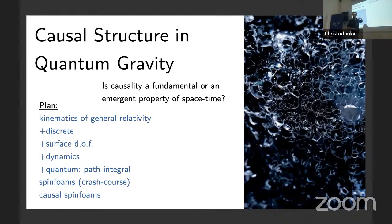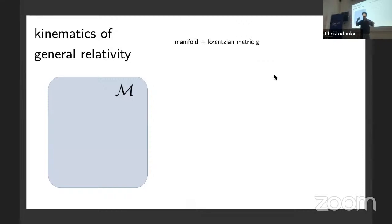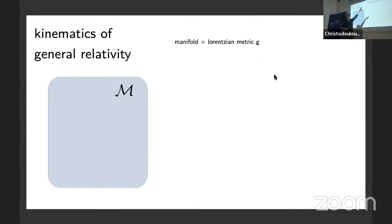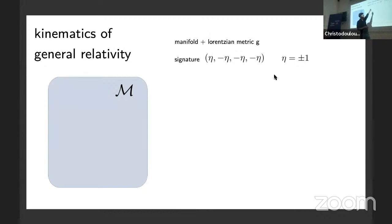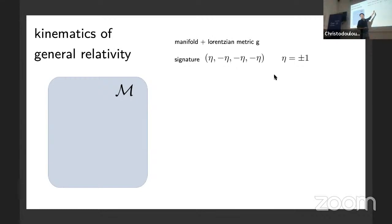So first, kinematics of general relativity. I say kinematics because I'm not going to put Einstein equations here — I'm just interested in the mathematical structure. The mathematical structure of the variables is given on a differentiable manifold which is four-dimensional, and a Lorentzian metric g. By Lorentzian I mean it has signature (1,3): one direction for time and three for space. Usually people specify whether eta is plus one or minus one, but general relativity is agnostic about this, so I keep this variable eta general.